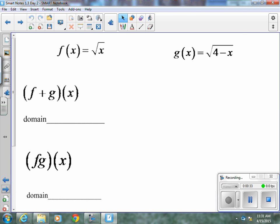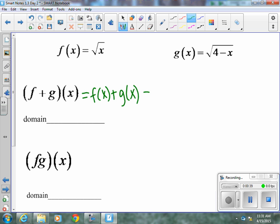First of all, f of x plus g of x is equal to f of x plus g of x, so in this case it's radical x plus radical 4 minus x. That's our function. We need to find its domain.